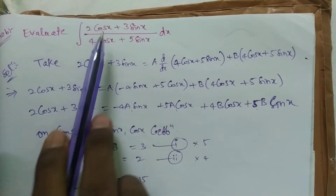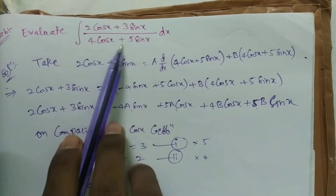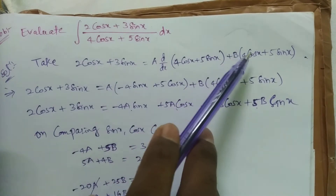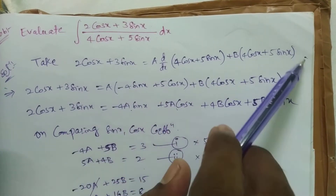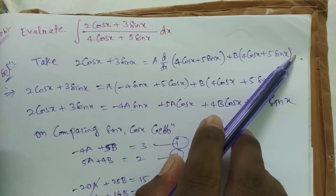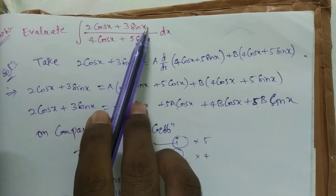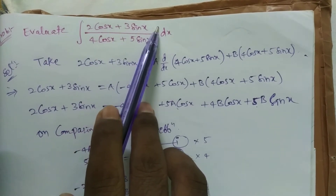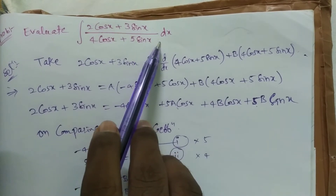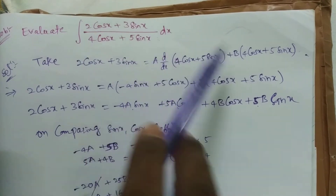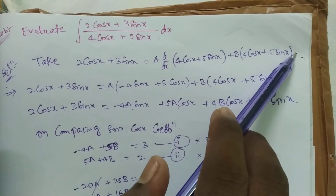Solution. Take the numerator 2 cos x + 3 sin x equal to A times d/dx of the denominator (4 cos x + 5 sin x) plus B times (4 cos x + 5 sin x). We don't take a plus-c constant here because the question is not asking for a constant in the numerator and denominator.